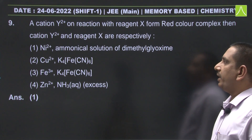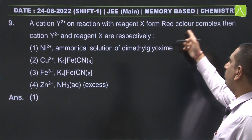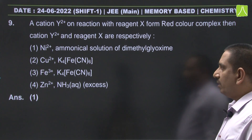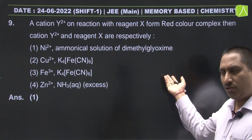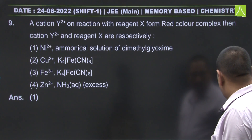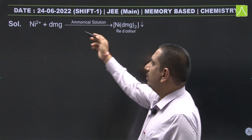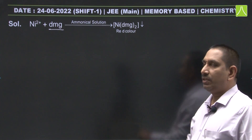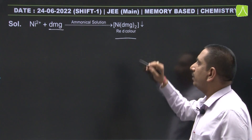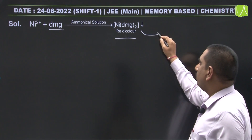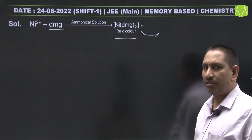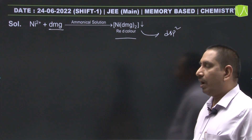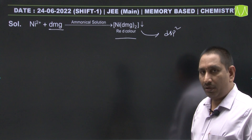Next: a cation Y²⁺ on reaction with reagent X forms a red colored complex. The cation Y²⁺ and reagent X are respectively nickel²⁺ and dimethylglyoxime. This belongs to qualitative analysis and coordination chemistry. Nickel²⁺ combined with dimethylglyoximate gives a red colored square planar complex with DSP² hybridization, which also contains intramolecular hydrogen bonding.